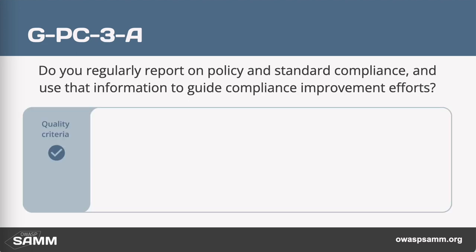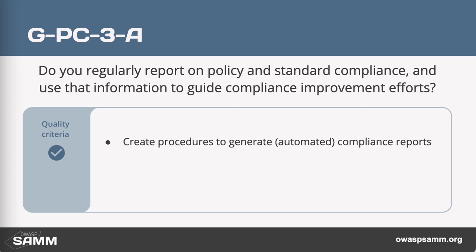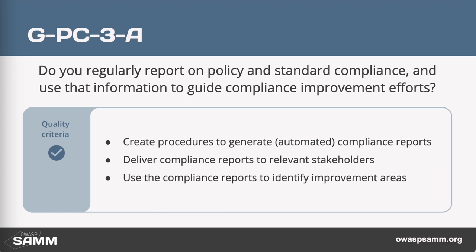At level three, we ask how we are assessing compliance to policies at the project level. Do we have a process where that gets reported up? Information on non-compliance or misunderstanding is used to improve our process — maybe we need better training, or to look at the wording of our policies, or improve the runbooks in order to improve compliance. The quality criteria include creating procedures to generate compliance reports (they could be automated but don't have to be), delivering compliance reports to all relevant stakeholders, and using those reports to identify improvement areas. At level three, you review the process, continuously improve, and use that as a feedback loop to other streams and other security activities.